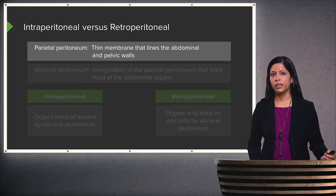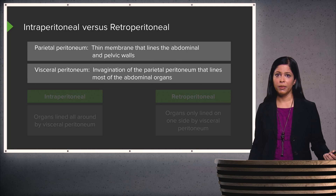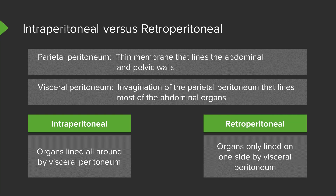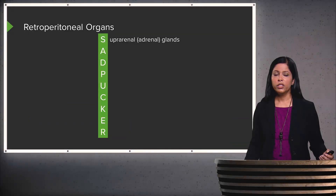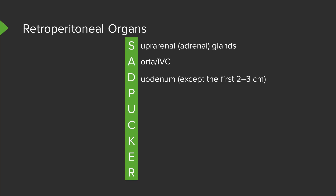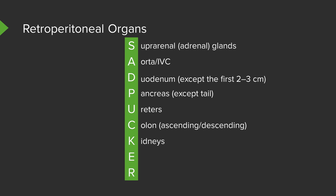The parietal peritoneum lines the abdominal and pelvic walls, while the visceral peritoneum lines most abdominal organs. Intraperitoneal organs are lined all around by the visceral peritoneum; retroperitoneal organs are lined on only one side. Retroperitoneal structures are remembered by the mnemonic SAD PUCKER: Suprarenal (adrenal) glands, Aorta and IVC, Duodenum (excluding the first 2-3 cm), Pancreas (except the tail), Ureters, Colon (ascending and descending; transverse is intraperitoneal), Kidneys, Esophagus (abdominal portion), and Rectum.